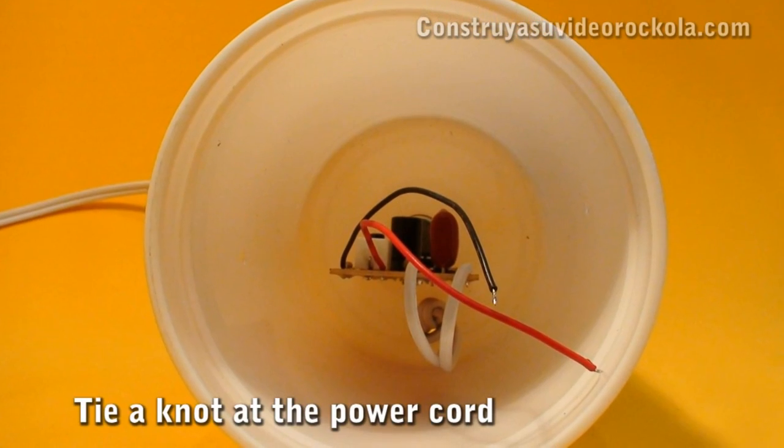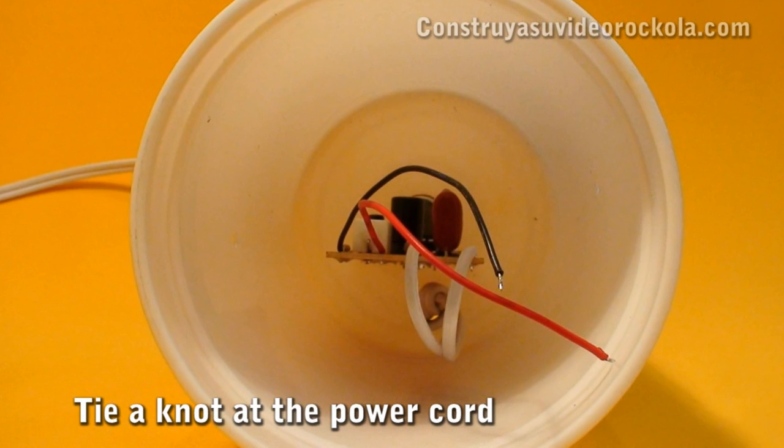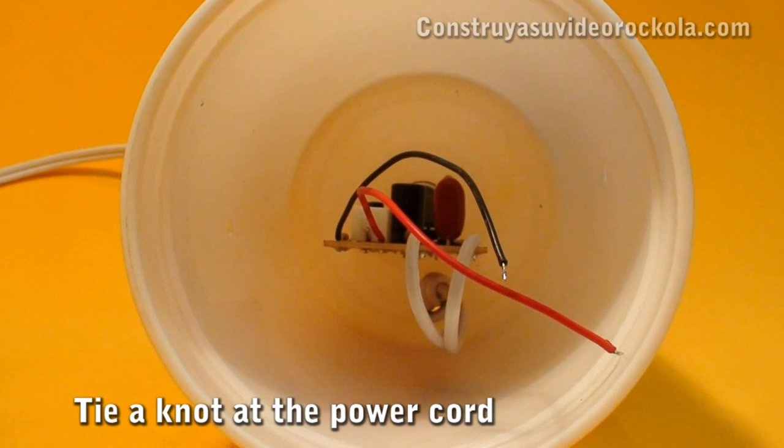The board is installed and secured with the pot using a nut and washer. It is important before routing the power cord to tie a knot so that when we pull the cable we do not abuse the circuit.